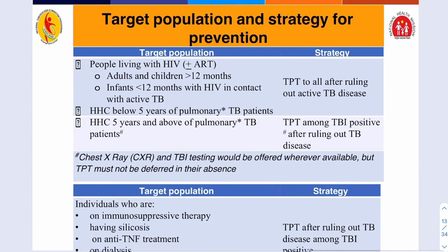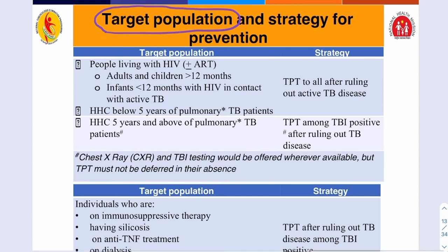There are certain target populations and strategies for prevention. It is not possible — nor necessary — to give preventive strategy or preventive medications to each and everyone. So we need to set up a target population and in this group we need to give the preventive therapy. So who are the target population and what are the strategies?